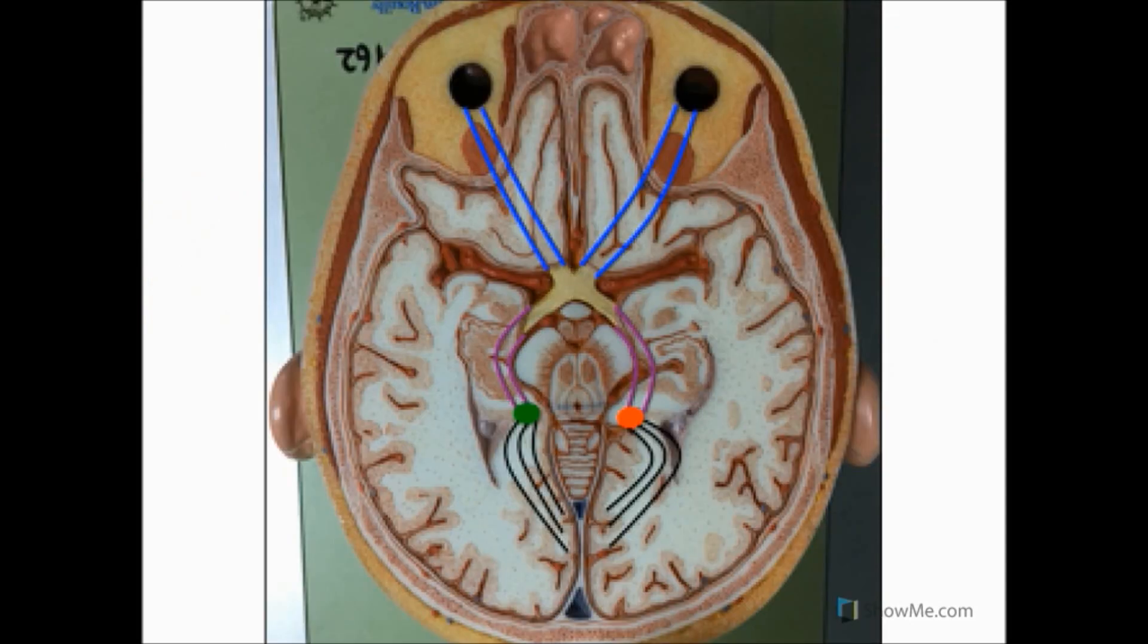The optic nerve then leaves the orbit by the optic canal before reaching the optic chiasm. The optic chiasm is found immediately superior to the pituitary gland, which is located within the sella turcica, but also immediately inferior to the hypothalamus.